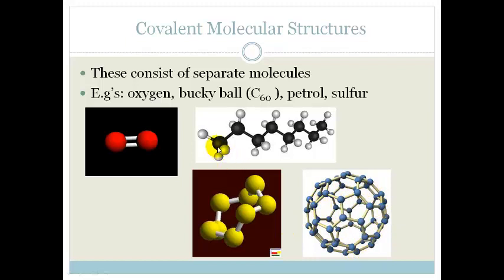This is petrol. It's called octane. It's made up of 8 carbons and a whole bunch of hydrogens. And sulfur is interesting because it makes up this angular, circular type molecule made up of 8 sulfur atoms.